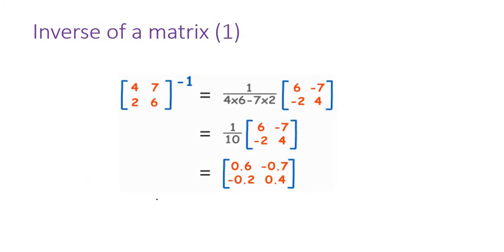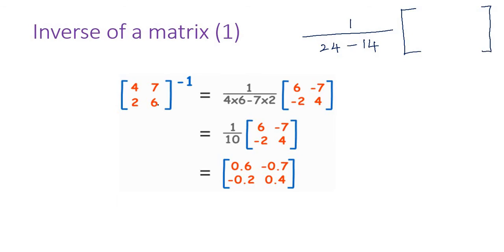For a square matrix we know that we can take the inverse; it should be a full-rank matrix. I have a simple square matrix [4, 7; 2, 6] — how to find the inverse. The determinant is 4×6 minus 7×2 = 24 minus 14 = 10. So each element of the matrix is divided by 10: the diagonal elements are swapped (6 and 4), and the off-diagonal signs are changed (−7, −2), giving the inverse as [0.6, −0.7; −0.2, 0.4].